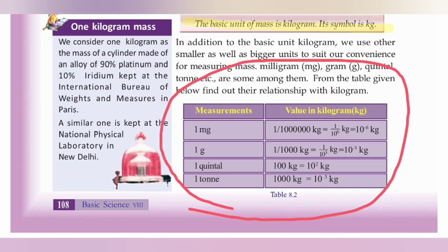1 mg is 10 raise to minus 6 kg. 1 g is 10 raise to minus 3 kg. If you want to learn more about this chapter, you will be able to learn more.